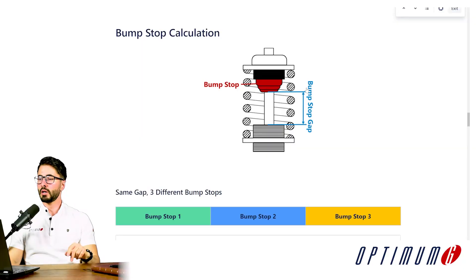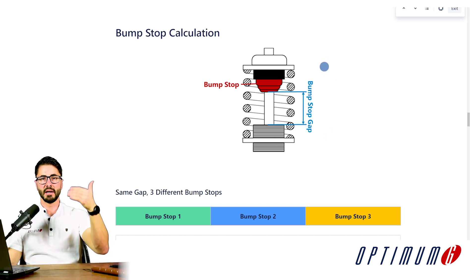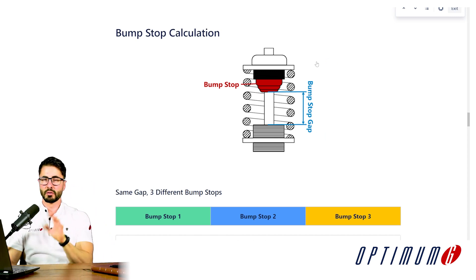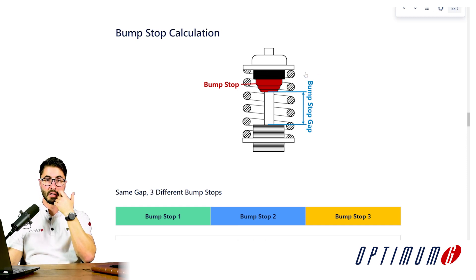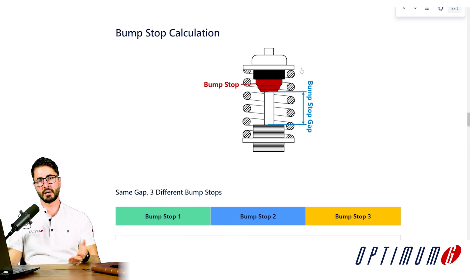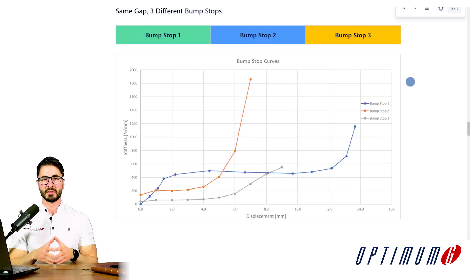When defining bump stops, you have to define two things. Number one: what is the bump stop curve you would like to use? And number two: what is the bump stop gap — meaning how long it should take until the bump stop is engaged. We're going to do a quick case study with this GT3 car: first pick a given bump stop, then pick a given bump stop gap for a specific track.